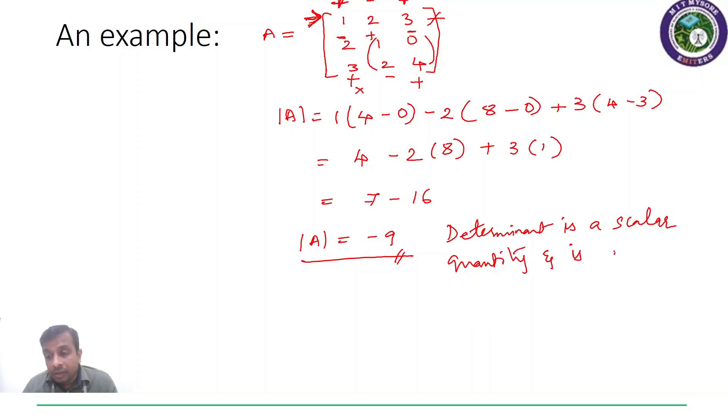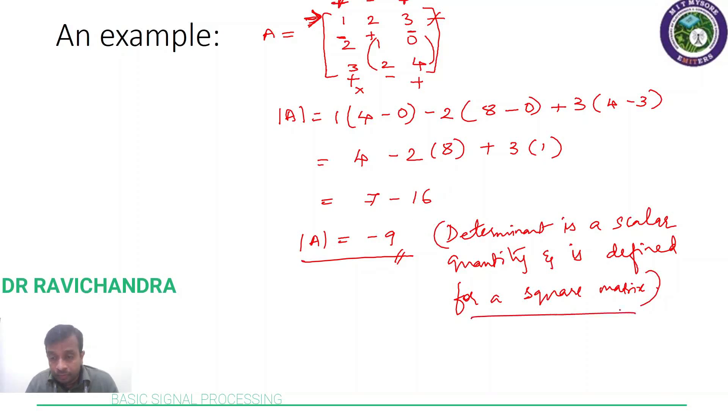That would make it 7 minus 16, that is minus 9. This would be the determinant value. Please note determinant is a scalar quantity and is defined for a square matrix. Viewers are suggested to expand the matrix using the third row and check if they get the same answer as minus 9. If you get a different answer, please let me know in the comments and we can discuss further. You can contact me at the email id mentioned in the comment box. Thank you.